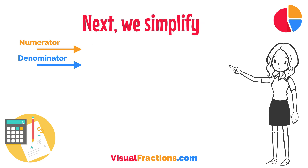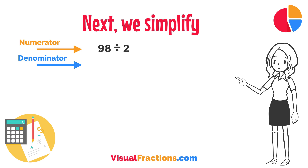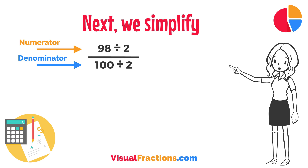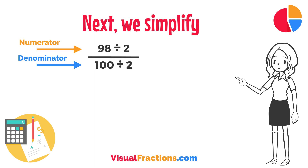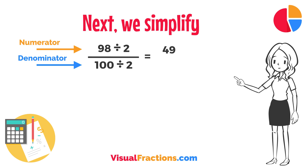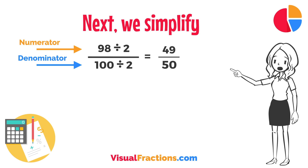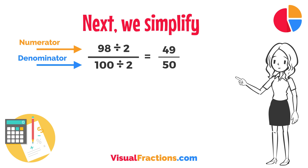Next, we simplify. Both the numerator and the denominator in 98 one-hundredths are divisible by 2, the greatest common divisor. Divide 98 by 2 to get 49, and divide 100 by 2 to get 50. So, 98 one-hundredths simplifies neatly to 49 fiftieths.